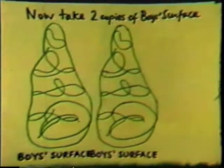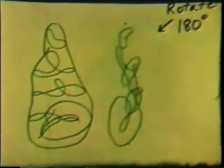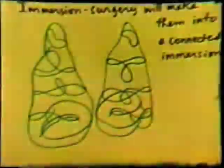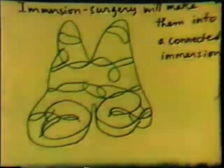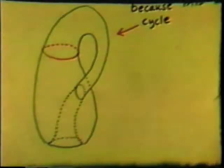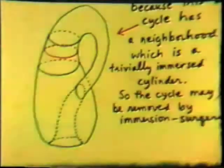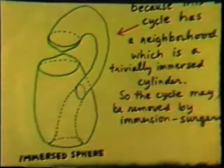Now take two copies of Boyd's surface. Rotate the right-hand one 180 degrees, and join them by an immersion cobordism. This is now an immersed Klein bottle. The standard immersion of the Klein bottle is immersion cobordant to zero because this cycle has a neighborhood which is a trivially immersed cylinder. So the cycle may be removed by immersion surgery. The cycle now disappears, and what we have is an immersed sphere.